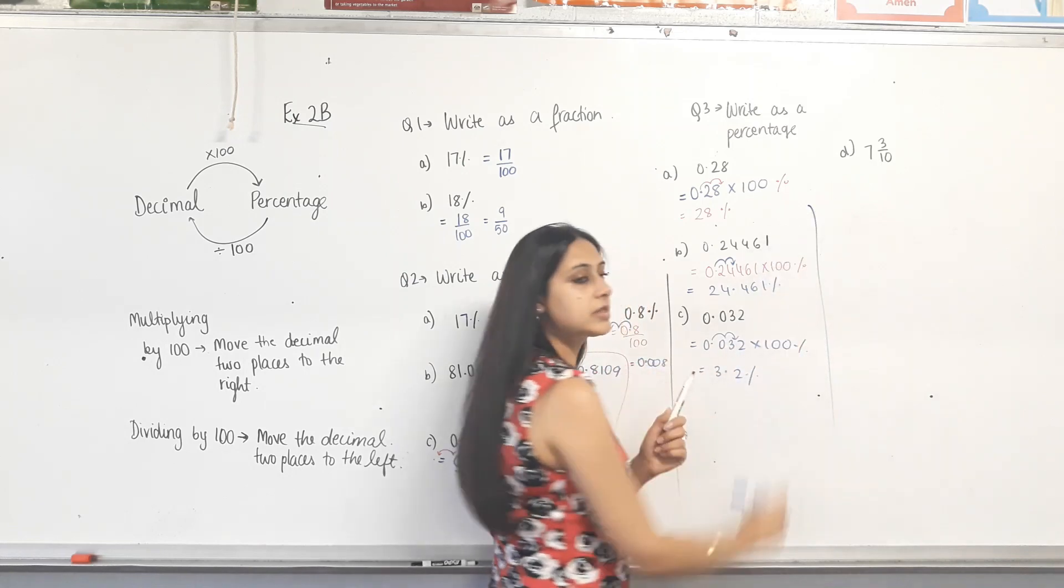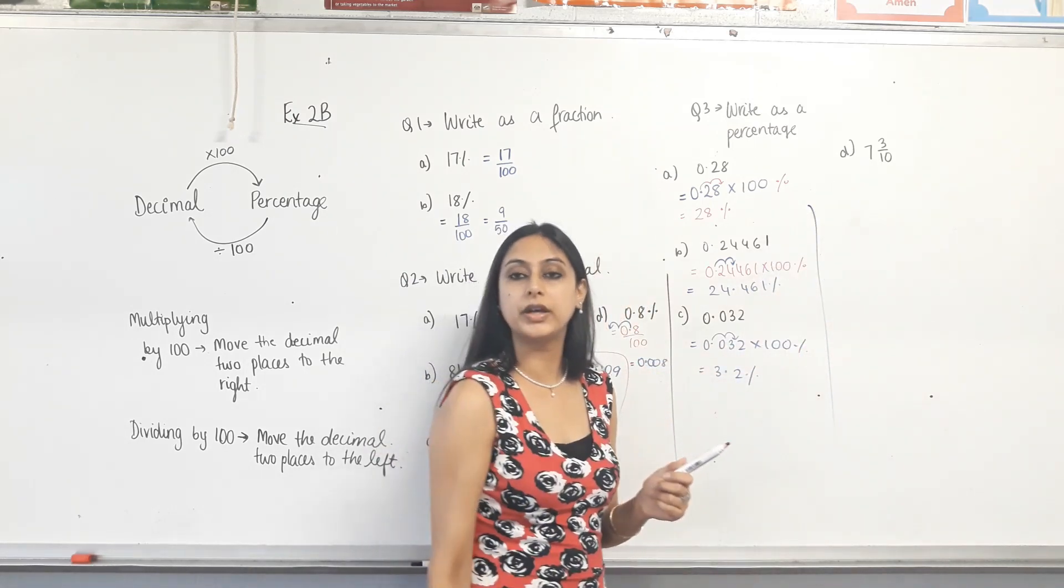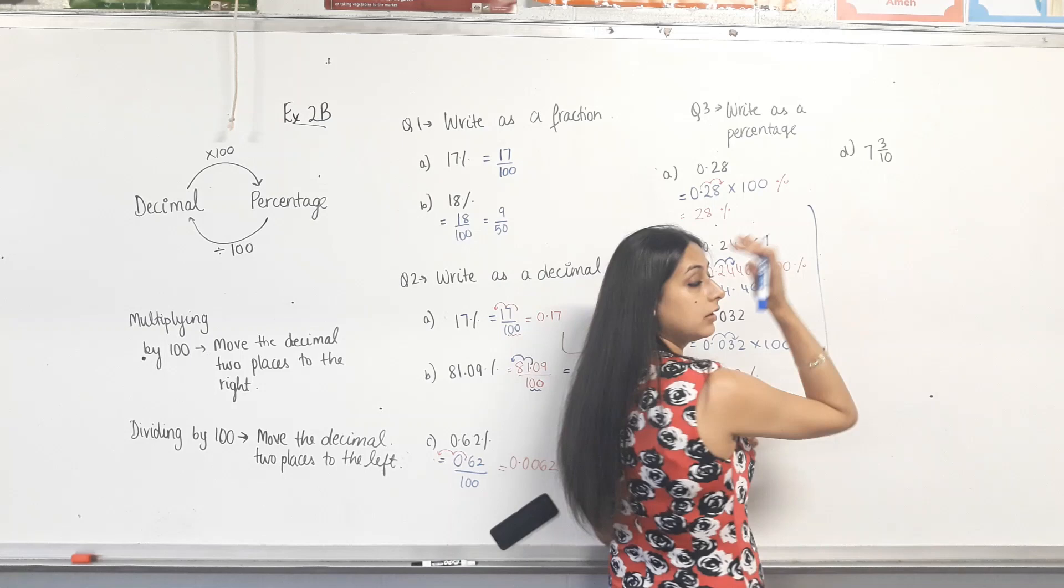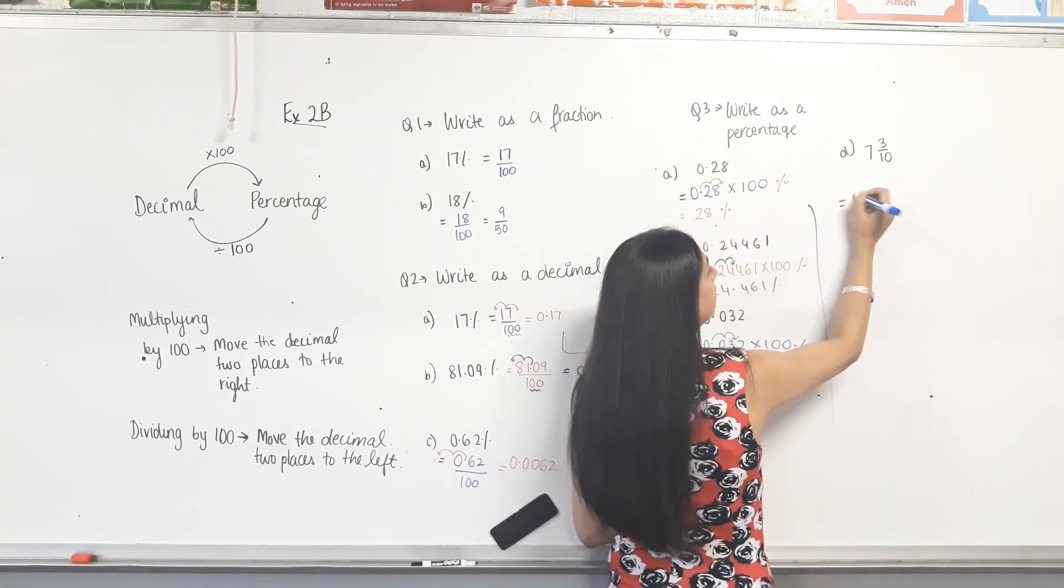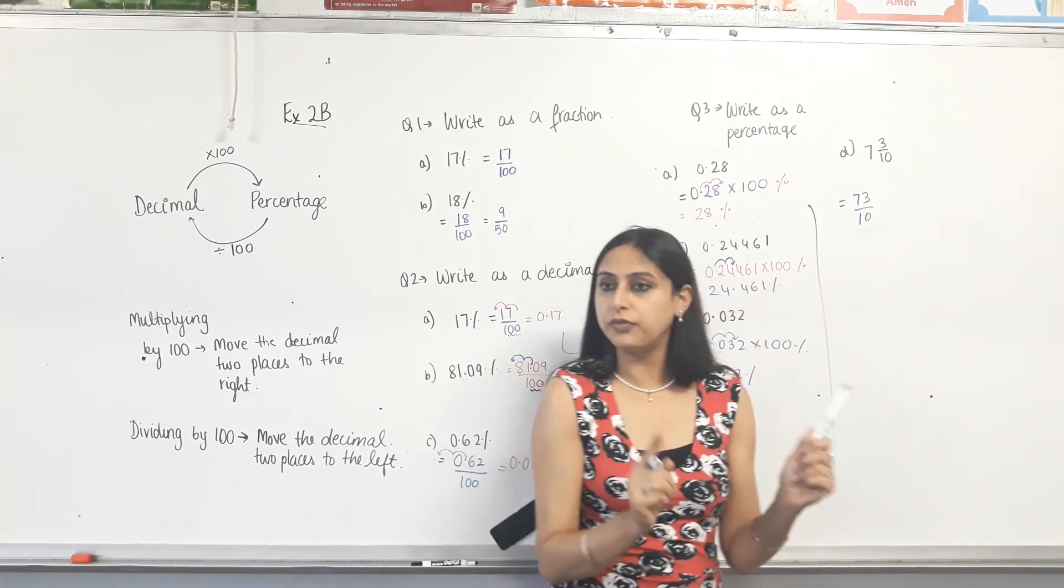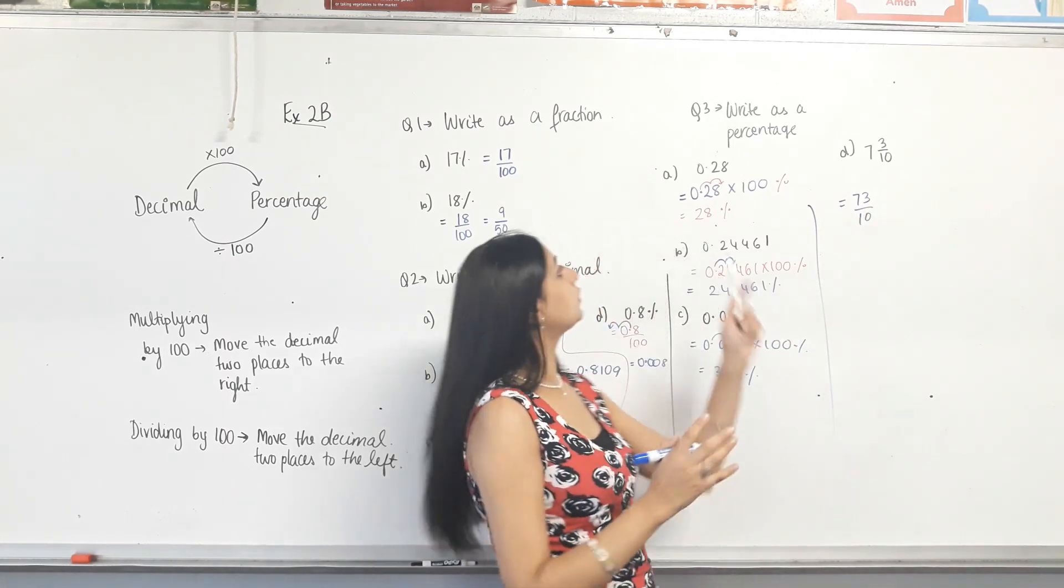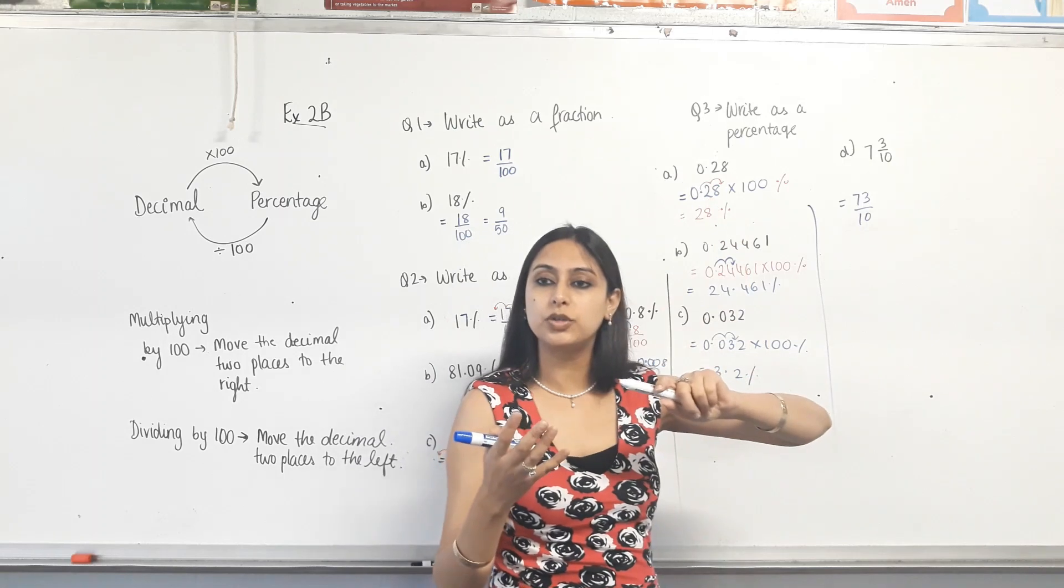Now, this is a mixed number. Remember how we convert a mixed number into a fraction? So, first we did 10 times 7. 10 times 7 is 70. 70 plus 3 is 73. So, this is the first step. It's still a fraction. I now need to convert it to a percentage. So, how do we convert it to a percentage? Times by 100.